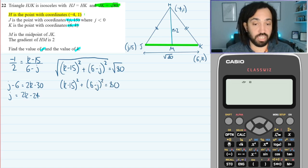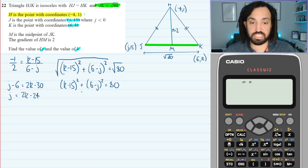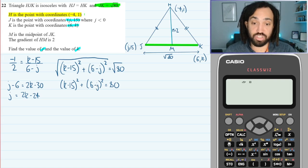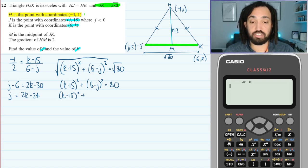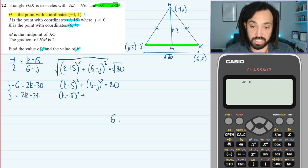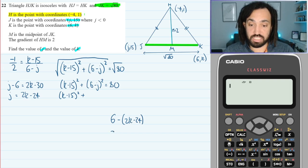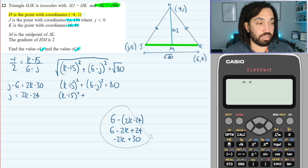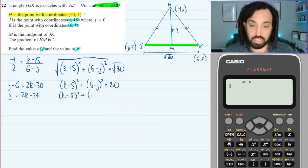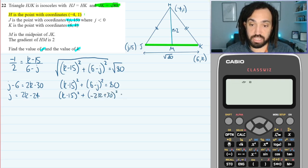Now we've got two equations — one linear and one quadratic. Like when we solve quadratic simultaneous equations, we're going to substitute the linear one into the quadratic one. We know that 6 minus J is 2K minus 24, so 6 minus J is the same as 6 minus (2K minus 24), which equals minus 2K plus 30. So substituting in: (K minus 15) squared plus (minus 2K plus 30) squared equals 80.